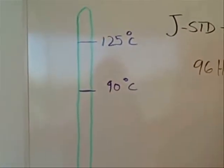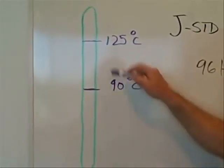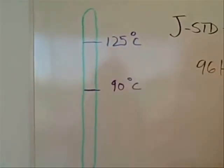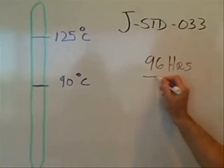So my lower limit of 90 degrees C, and my upper limit of 125 degrees C. And they said, if you're going to bake components inside this tolerance region, you can bake up to a total cumulative time of 96 hours.